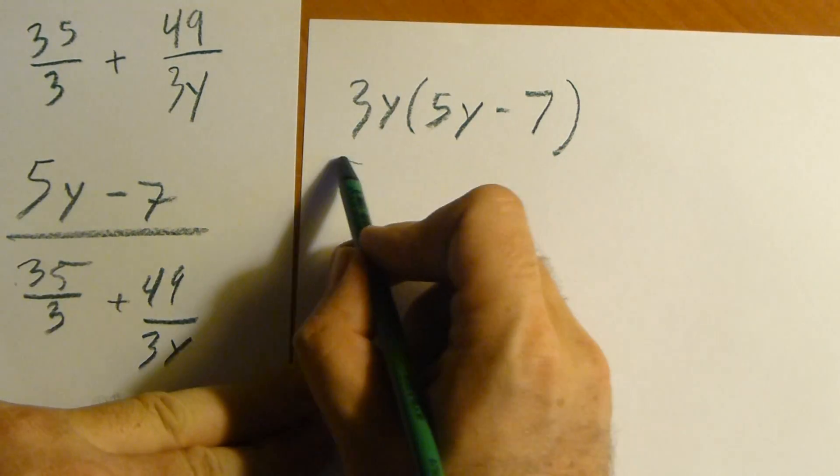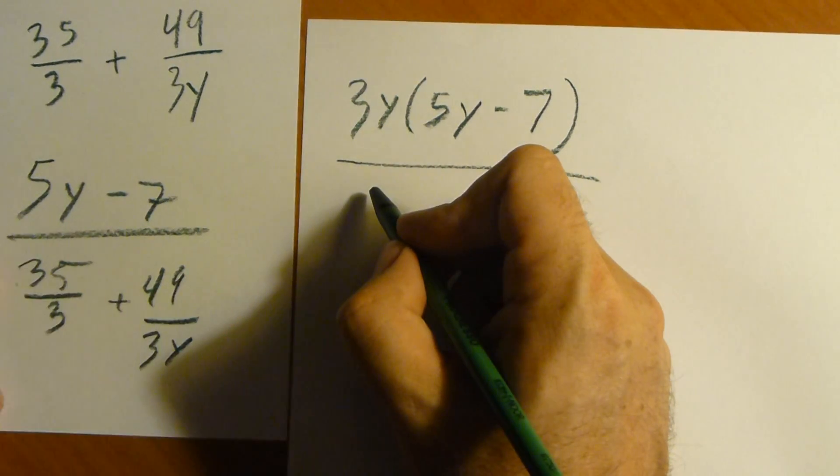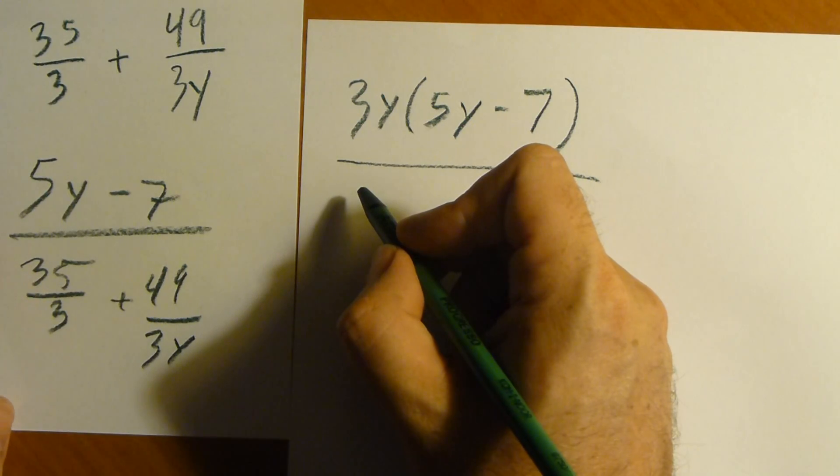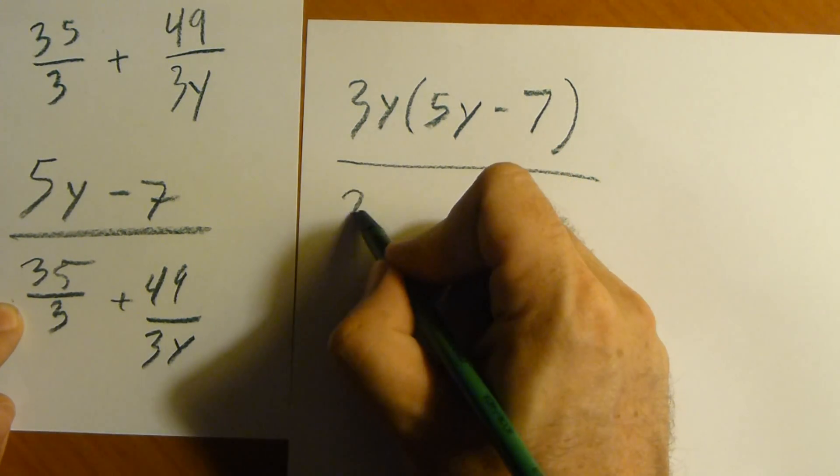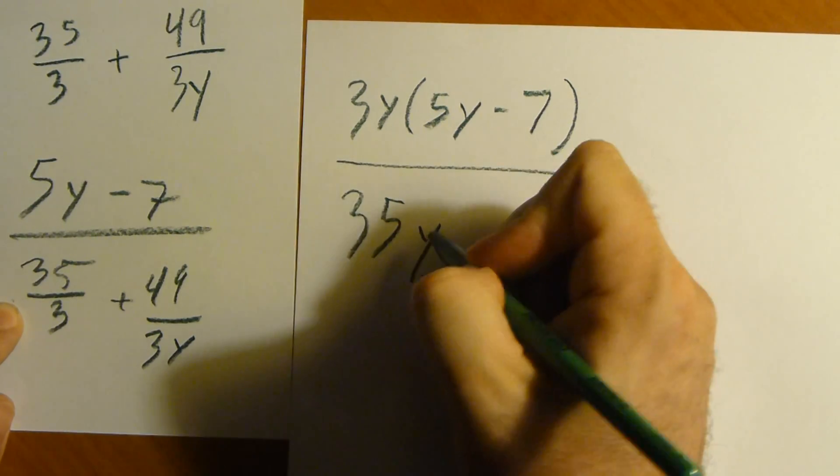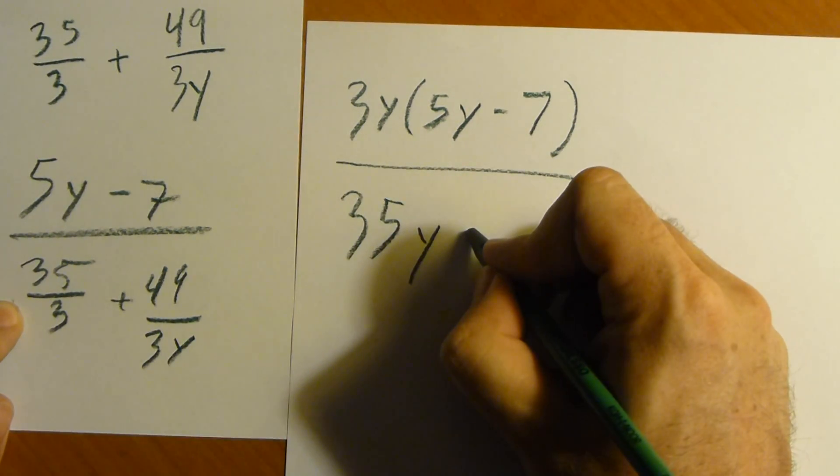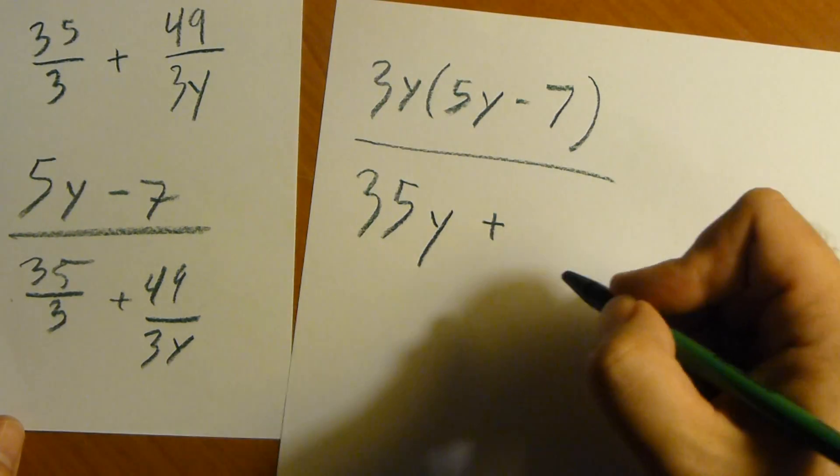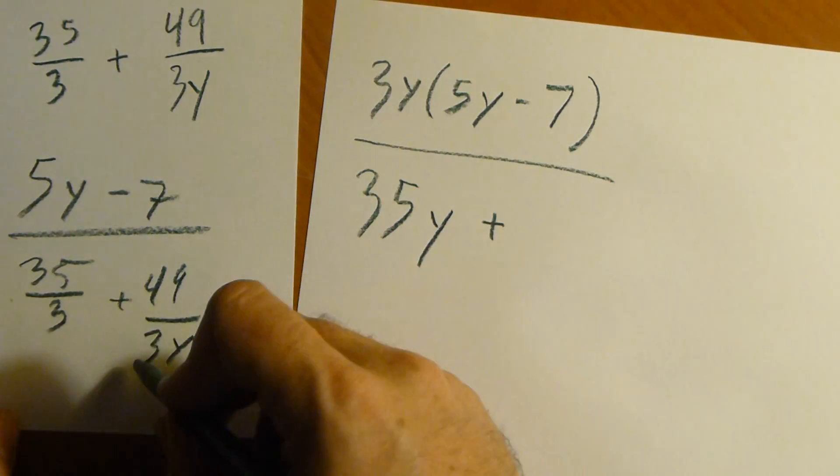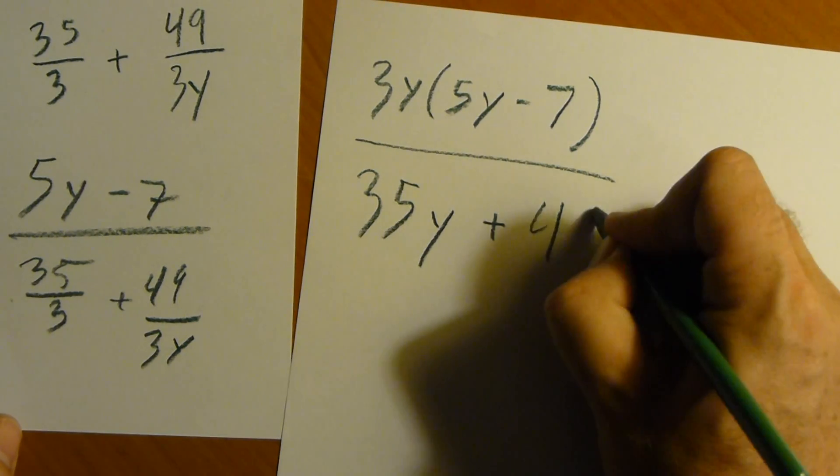And on bottom here we'll have, let's see, 3y times 35 over 3. The 3's will cancel out. We're left with 35y. 3y times 49 over 3y. The 3y's will cancel out. We're left with 49.